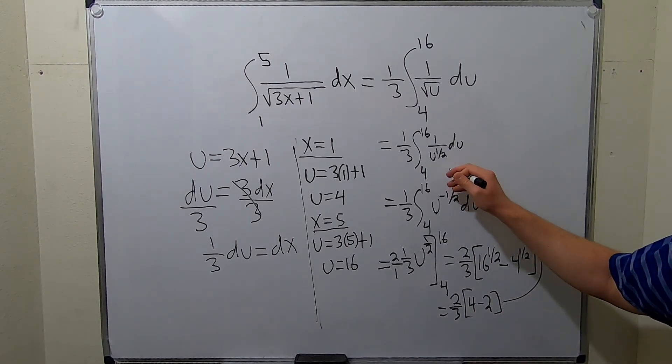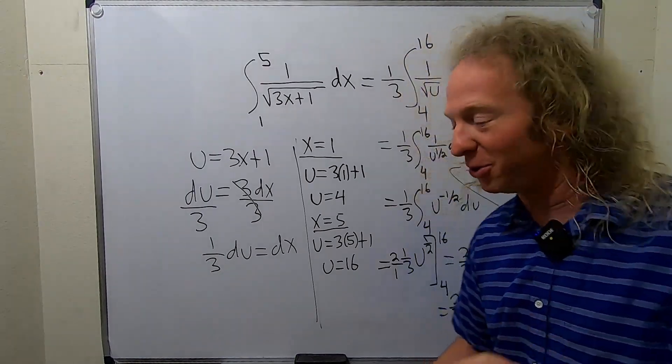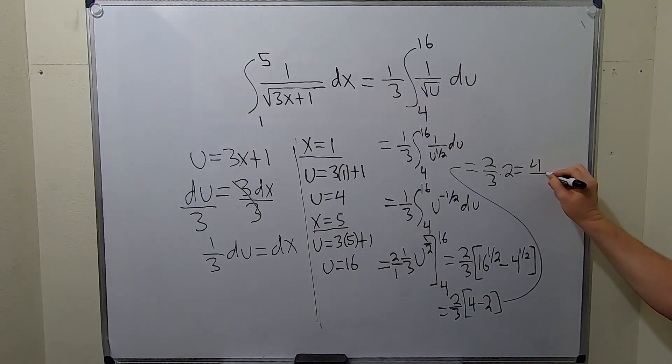So you get 4 minus 2. It's a really bad place to get stuck. So this is 2 thirds. 4 minus 2 is 2, so we get times 2. 2 times 2 is 4, so we end up with 4 over 3. And that's it.